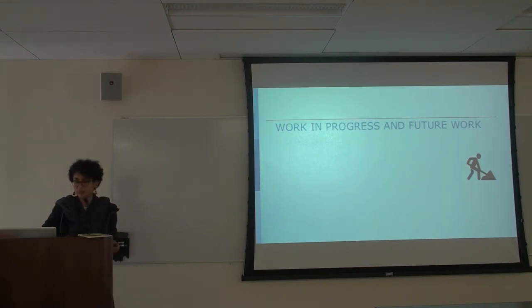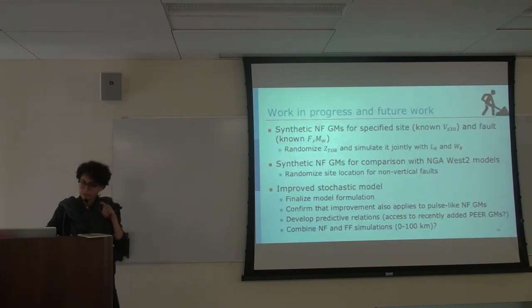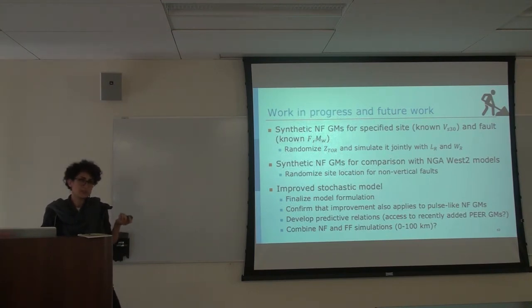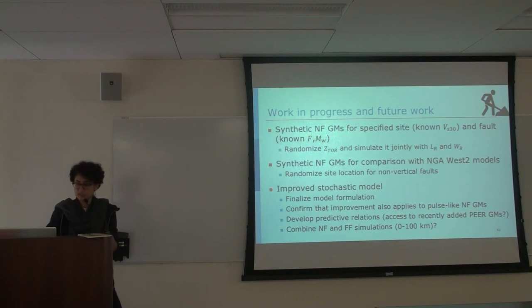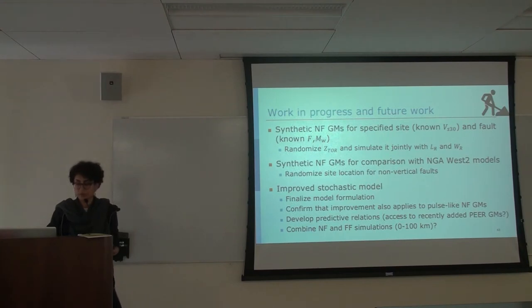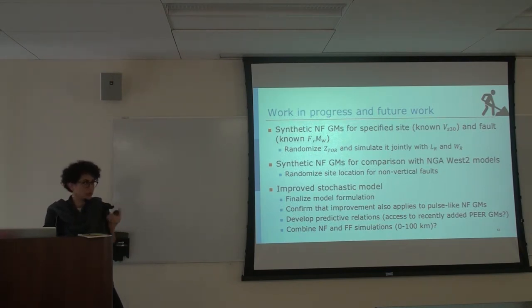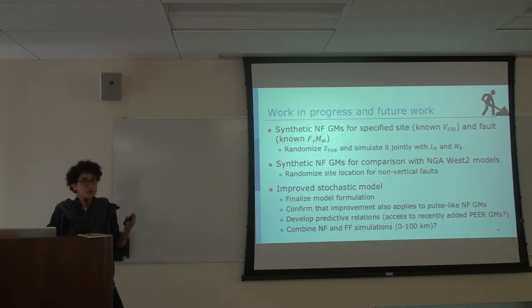To end with work in progress and future work: for synthetic near-fault ground motions being simulated for a specific site and fault, we're working on also randomizing ZTOR - we've been using a deterministic function and want to simulate it jointly with the rupture dimensions. We also want to randomize the site location for non-vertical faults, which is a slightly more difficult geometric problem. For the improved stochastic model, we're finalizing the model formulation and need to confirm that the improvements extend to pulse-like near-fault ground motions. We still need to develop predictive relations and possibly combine near-fault and far-field simulations in a single framework.